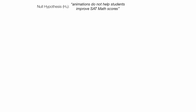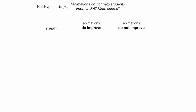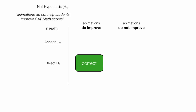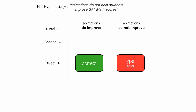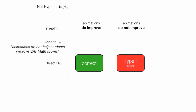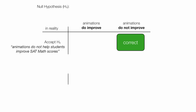I'm going to build this table again with the columns in reality. If I reject the null hypothesis and animations do improve test scores, I make the correct decision. If I reject the null hypothesis and animations do not help students improve SAT math scores, I commit a type 1 error. If I accept the null hypothesis and agree that animations do not help students, and animations actually do not help students, that's the correct decision. If I accept the null hypothesis but in reality animations do improve, I commit a type 2 error.